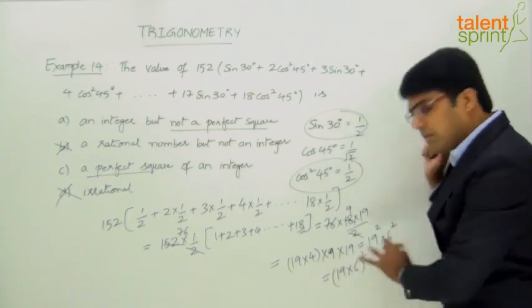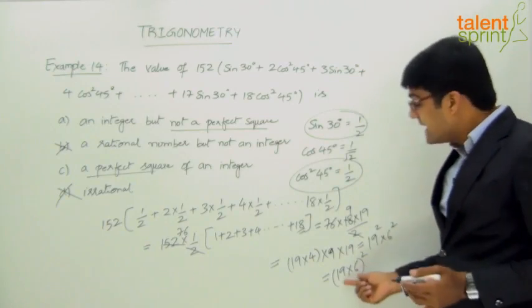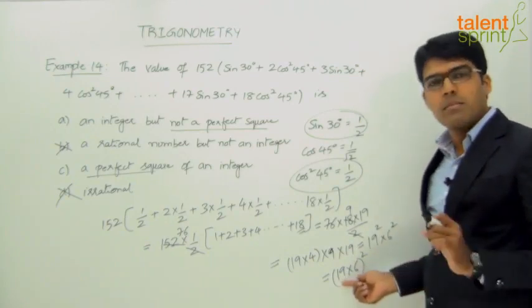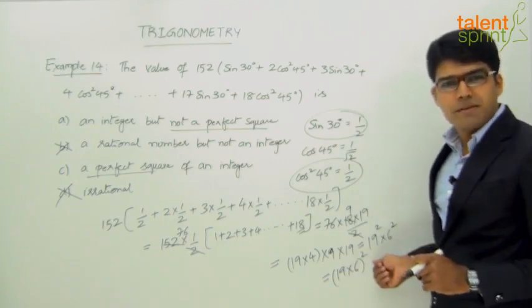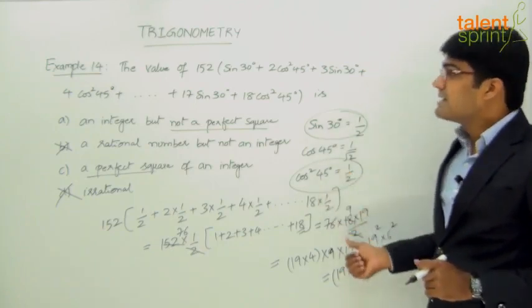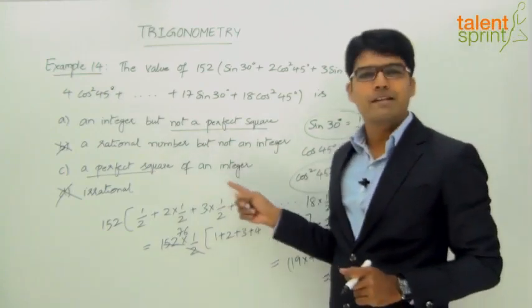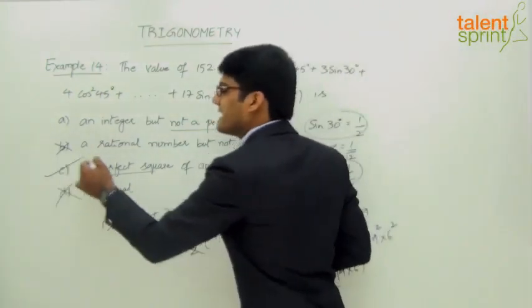Now without calculating the value, can we say this is a perfect square? Yes. Because 19 into 6, whatever be the number there, 114. 19 into 6 is 114. 114 square. It is a perfect square. That means the given simplification will give us a perfect square, a perfect square of an integer. Hence, option C is the correct answer.